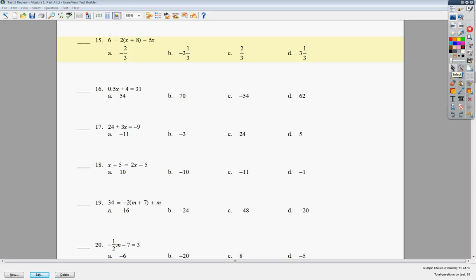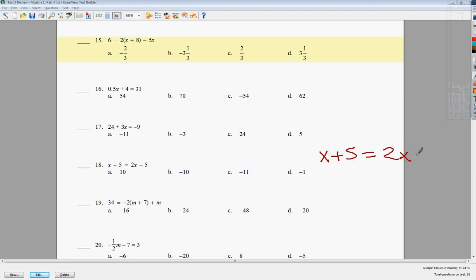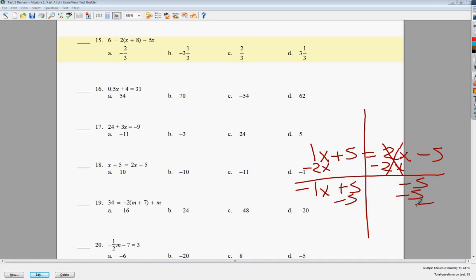Anyway, number 18 now. This is one of the x on both sides. It's a real simple x on both sides question. Or variable on both sides. I can move the x or the 2x. I tend to move everything to the left. Minus 2x. Those go away. 1 minus 2 is negative 1x. I need to subtract 5 from both sides. This gives you negative 10. These cancel. I need to divide by negative 1 on both sides. So I end up with x equal to 10. So my answer to number 18 is A.